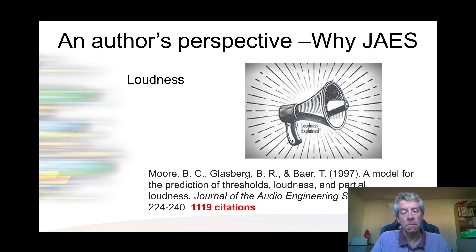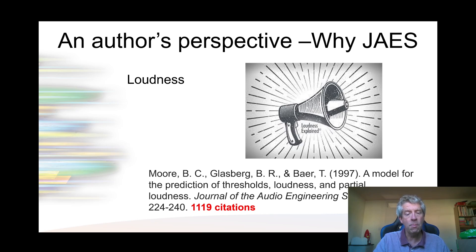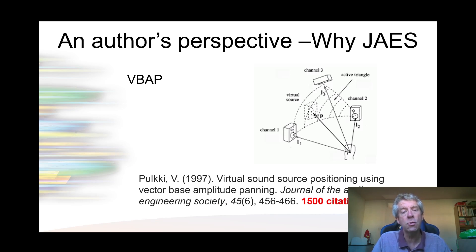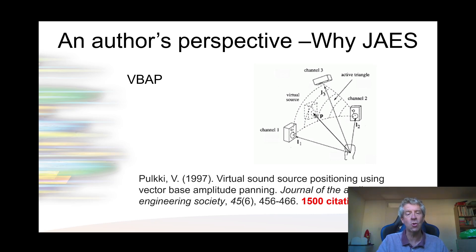Glasberg and Moore's loudness model appeared in the journal and is the main model used today to estimate how people perceive the loudness of a signal — dependent on loudness levels and a deep understanding of the hearing system — with just over 1,100 citations. Probably the most highly cited paper in the journal is Ville Pulkki's 1997 paper on vector-based amplitude panning, VBAP. His first major paper now has over 1,500 citations according to Google Scholar. These papers really do make a difference throughout the whole field, and that to me is a big reason why JAES is a target for publishing research.